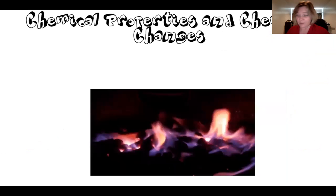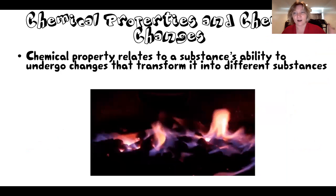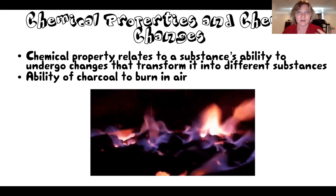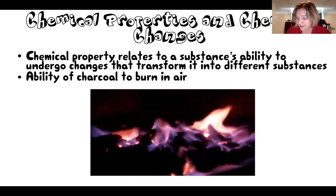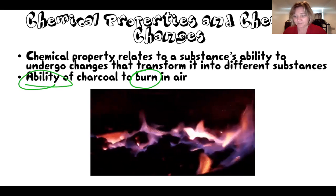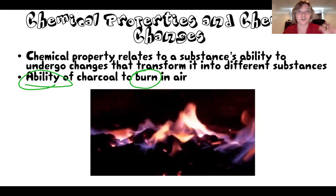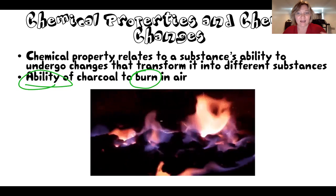Now we go to chemical properties and chemical changes. Whenever you see the word 'chemical,' the big clue is that the substance is completely different at the end of the process — you are either describing how a substance turns into something else or describing the process of turning into something completely different. For example, the ability of charcoal to burn in air is a chemical property. Burning is always a chemical change. When you look at charcoal before it's burnt, it's a black solid; after it's burned, it's ash — it's not the same thing at all anymore.